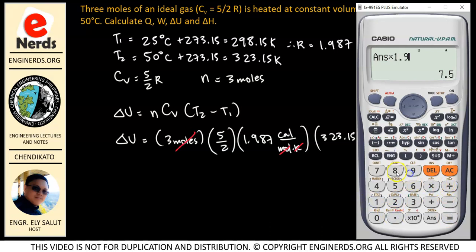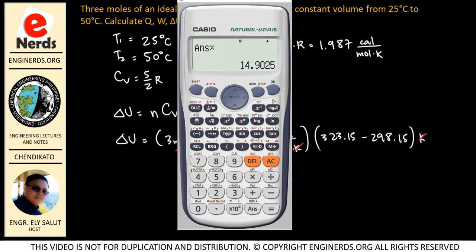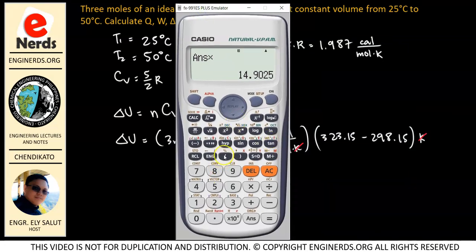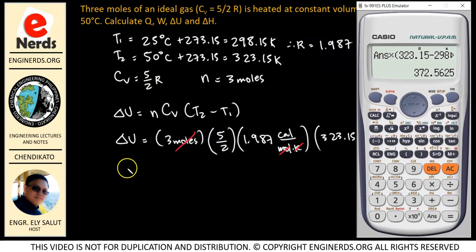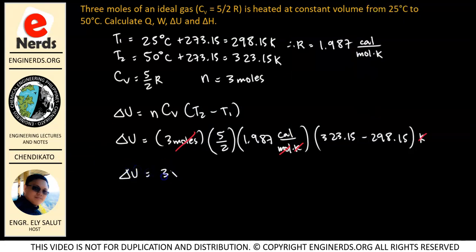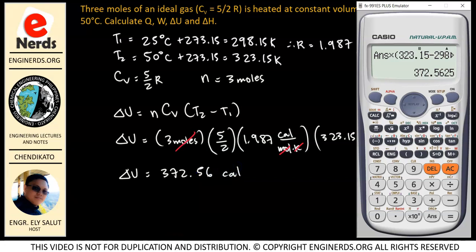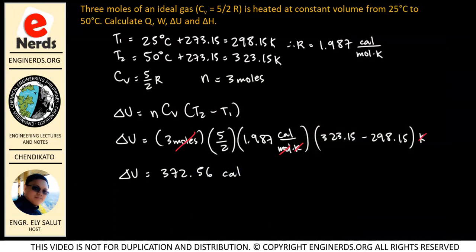Using our calculator: 3 times 5 divided by 2 times 1.987 times the temperature difference (323.15 minus 298.15) gives us 372.56. So our delta U equals 372.56 calories.